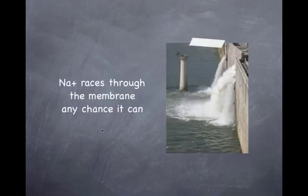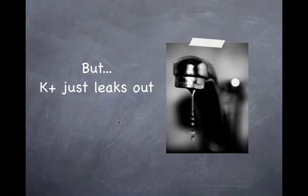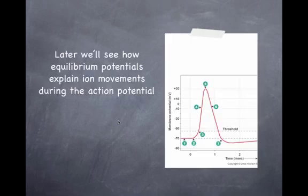This explains why sodium races through the membrane any chance it can. Because the gradient between where the membrane is and sodium's equilibrium potential is huge. But in comparison, potassium just kind of leaks out to make the membrane more negative. But since already the membrane is so close to where potassium wants it to be, its driving force just isn't that great. So that's the idea behind equilibrium values and driving force.